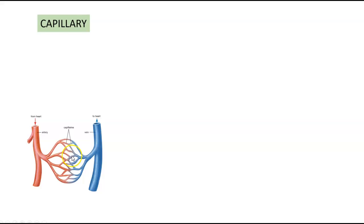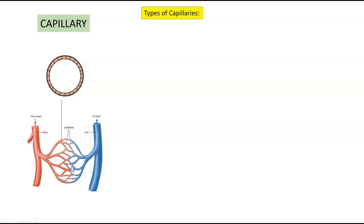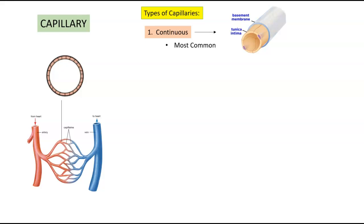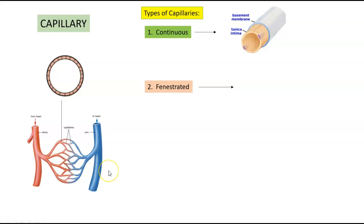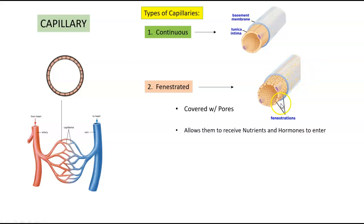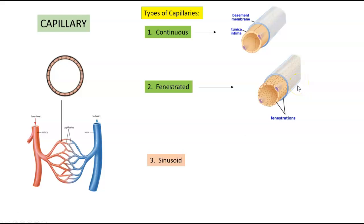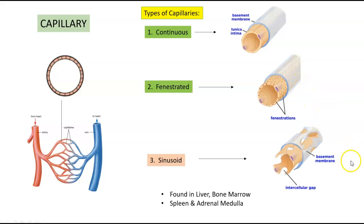The capillary system is the collection of vessels located between the arteries and the veins. They are single-celled and this is where all nutrients, gas exchange, and waste are dropped off and picked up. There are different types of capillaries in the body. The first is the continuous capillaries, the most common, found in the skin and muscles. The fenestrated capillaries are covered with pores — these holes allow nutrients and hormones to enter very easily. The last type is the sinusoid capillaries, found in the liver, bone marrow, spleen, and the adrenal medulla.